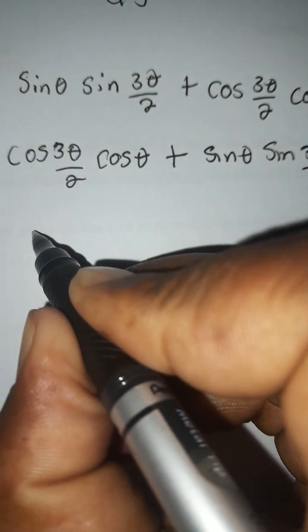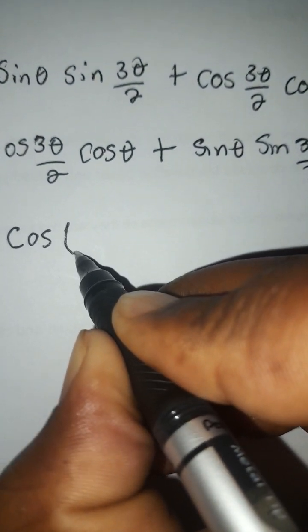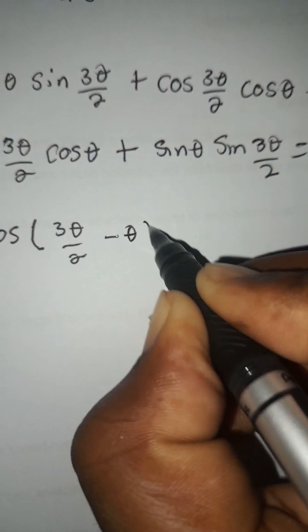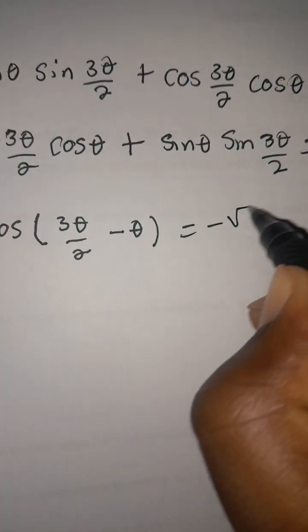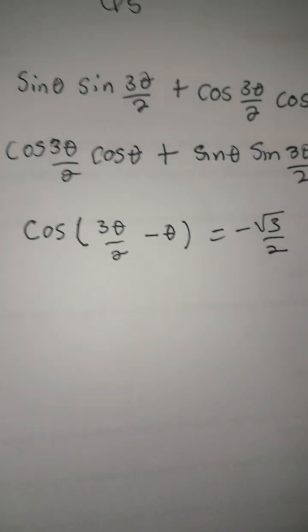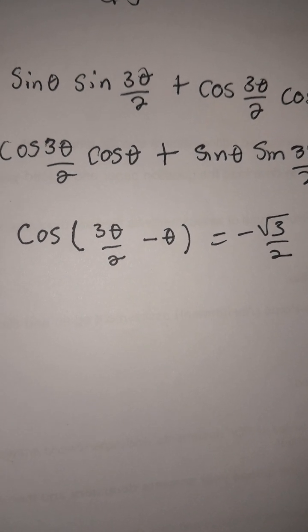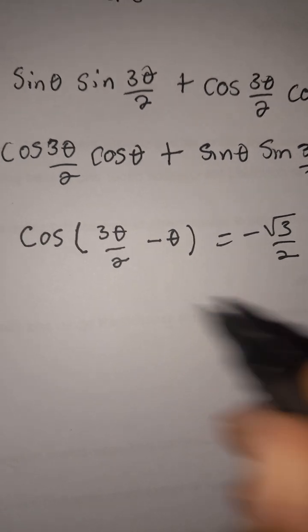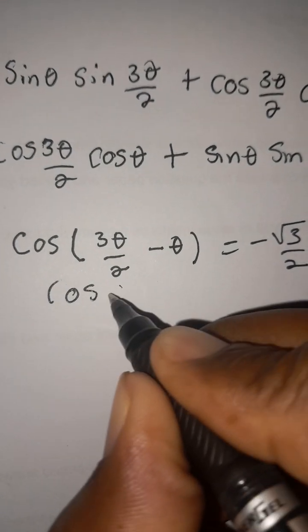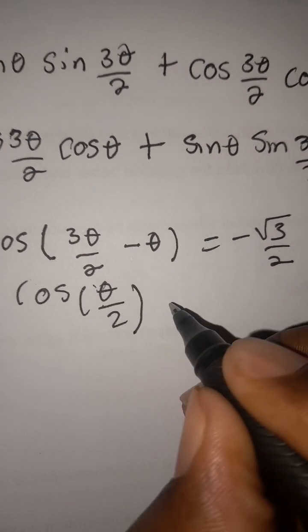From here we can write it as a single trigonometric ratio. Since it's a compound angle of cos, this will be cos(3θ/2 - θ) which equals negative √3 over 2. What we could do: 3θ/2 minus θ equals 3/2θ minus θ, which is θ/2 when you simplify it. So we're left with cos(θ/2) equals negative √3 over 2.